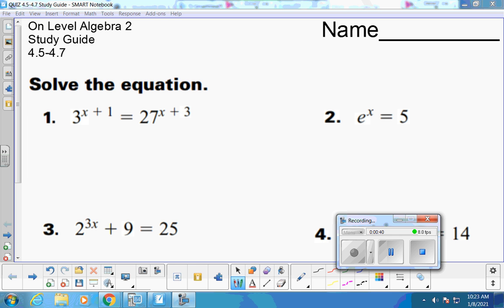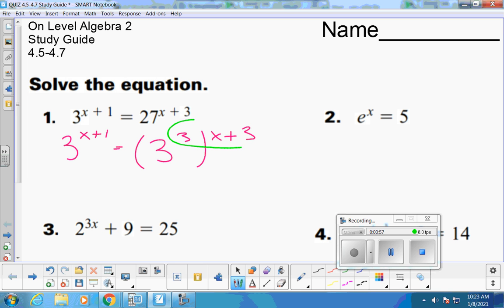Yep, so she's going to make everything be a base 3, so her bases can match. So 3, she's going to leave alone on the left, but 27, she's going to write as 3 cubed. And what that can allow us to do is solve for x, because when your bases match, like they do now, you know their exponents have to match. So we know that the x plus 1 has to equal 3 times the x plus 3. Now you do need to put parentheses around the x plus 3, because the 3 will need to distribute in.